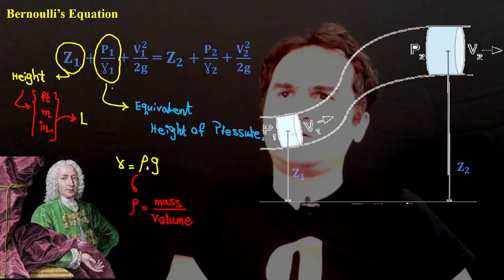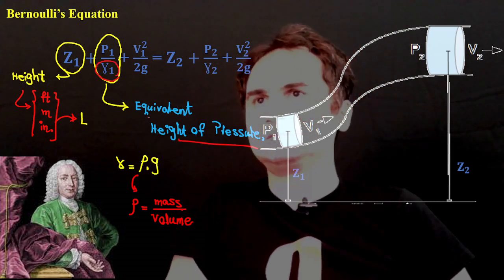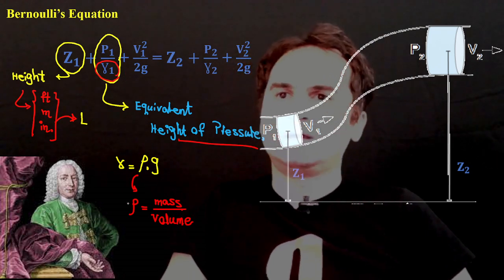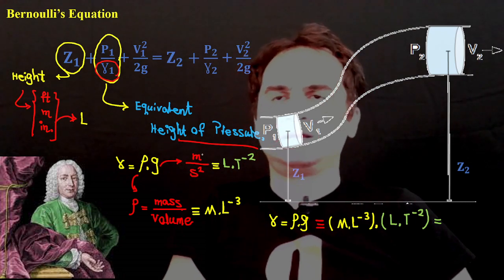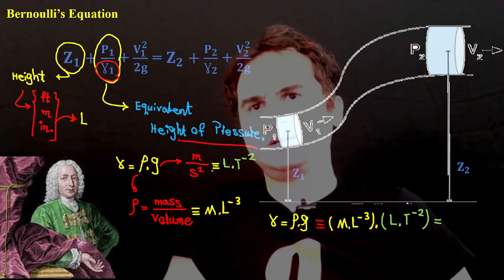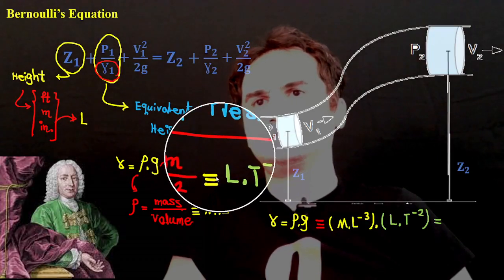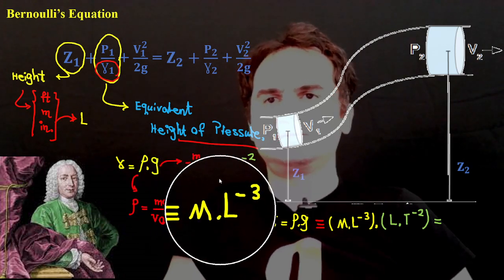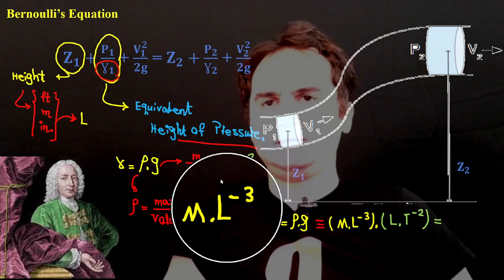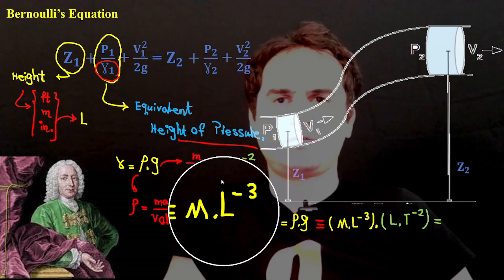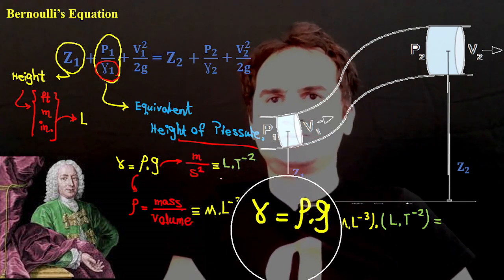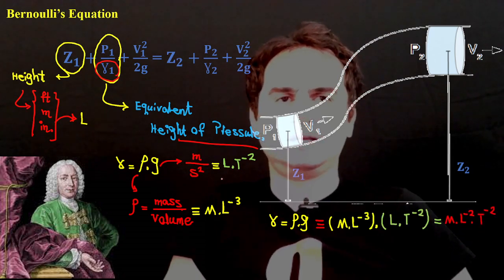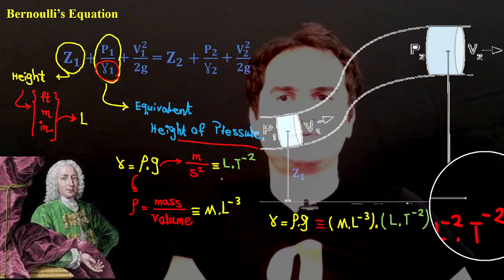For the denominator, we need the dimensions of γ (specific weight). Gamma equals density (ρ) times gravitational acceleration (g). Density ρ is mass over volume, so ρ has dimensions M·L⁻³. Gravity g is meters per second squared, so g has dimensions L·T⁻². Therefore γ = ρ·g has dimensions M·L⁻³ × L·T⁻² = M·L⁻²·T⁻².